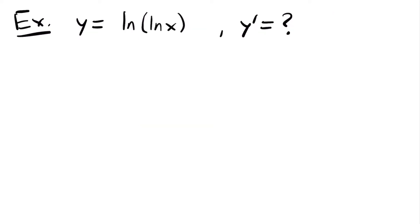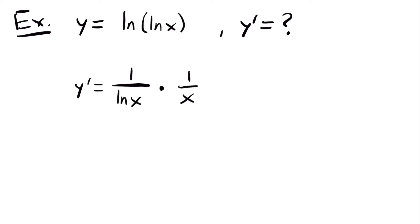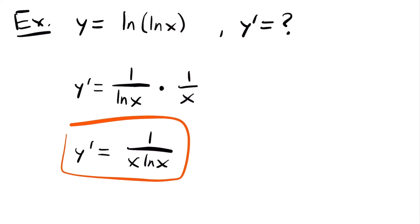Next, y equals the natural log of the natural log of x, and we want to find y prime. This requires the chain rule since we have a composite function — the outside and inside functions are both natural log. The derivative of the outside gives 1 divided by ln(x), multiplied by the derivative of the inside, which is 1/x. So y prime equals 1 divided by x·ln(x).